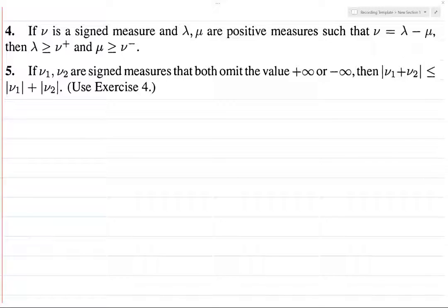This one's going to be quick. So we're looking at problem 5 here, and basically the first thing we're going to do is we want to be able to write ν₁ plus ν₂ and work with this signed measure.